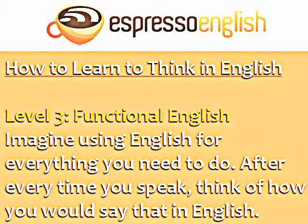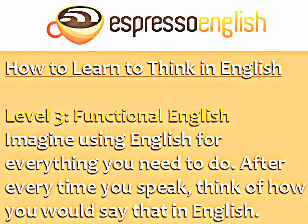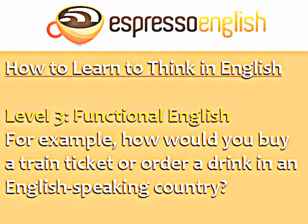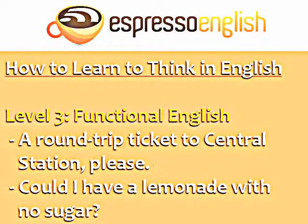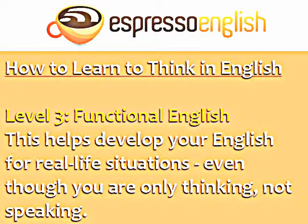Level 3 is functional English. On this level, you imagine having to use English for everything that you need to do. After every time you speak in your native language, think of how you would say that in English. For example, how would you buy a train ticket or order a drink in an English-speaking country? 'A round-trip ticket to Central Station, please.' 'Could I have a lemonade with no sugar?'